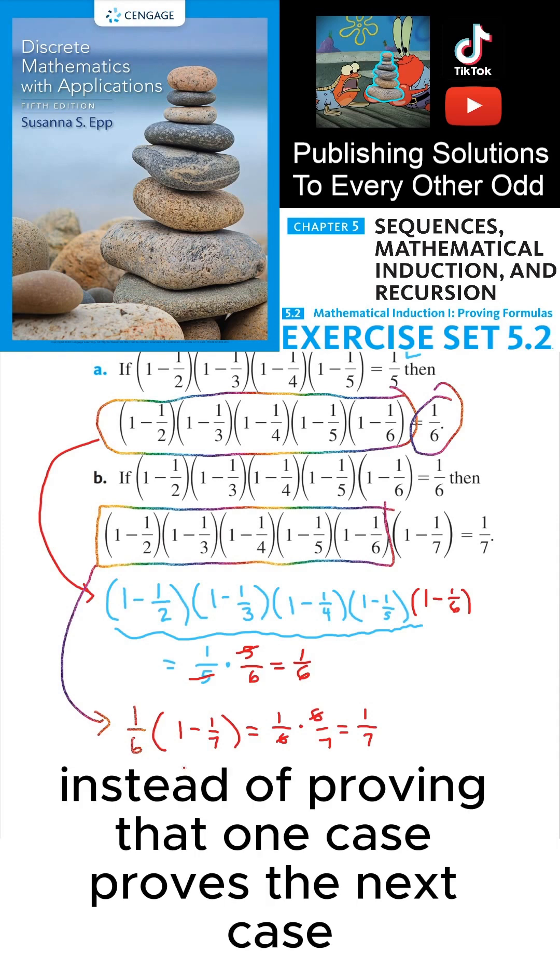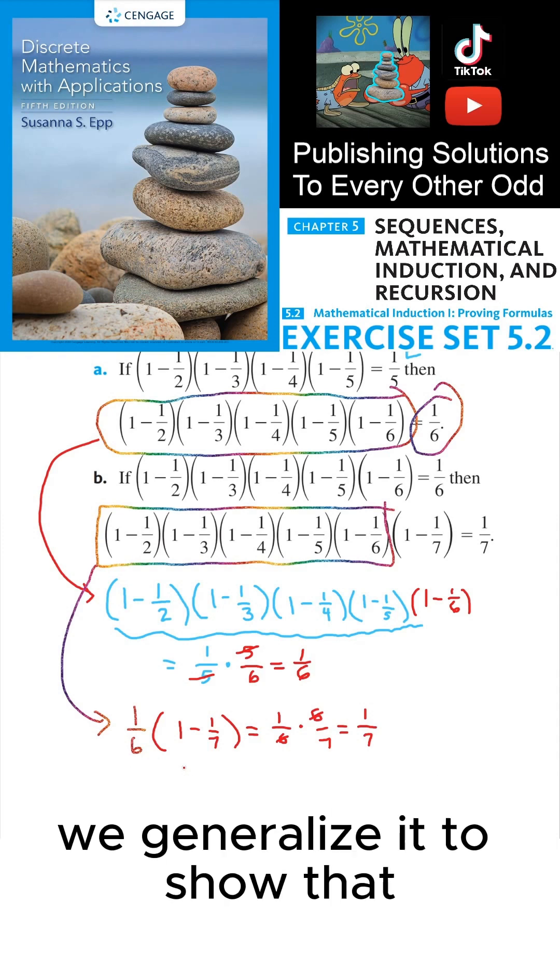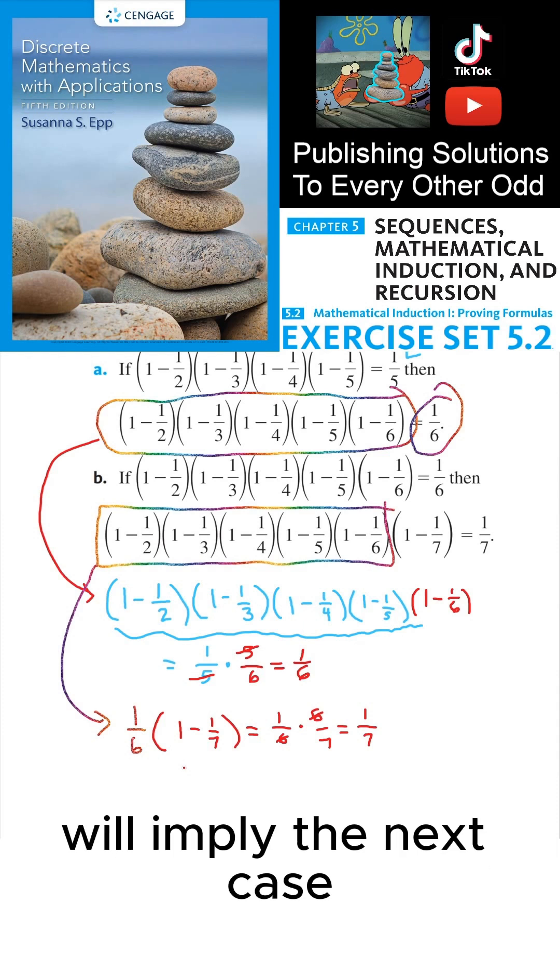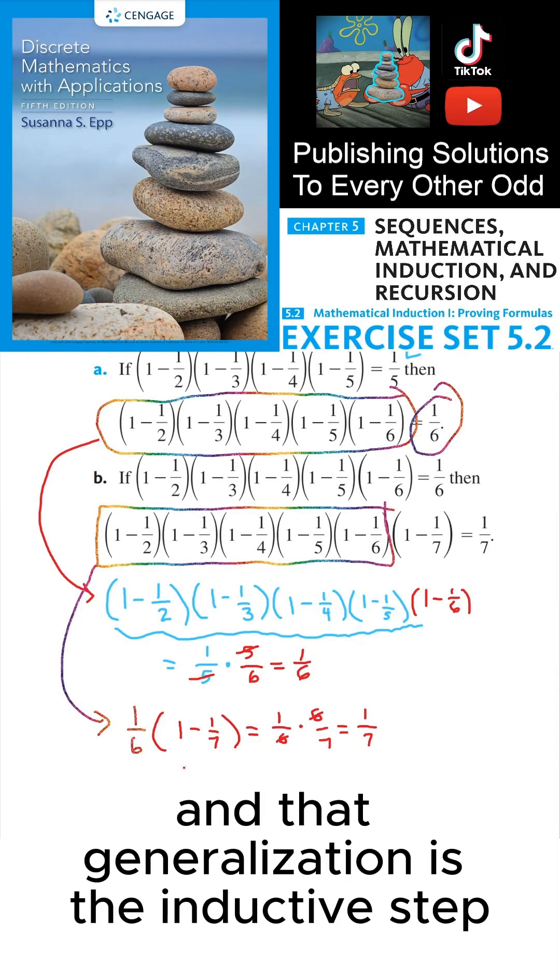And the inductive step is a generalization of this process. Instead of proving that one case proves the next case, we generalize it to show that any arbitrary case will imply the next case. And that generalization is the inductive step.